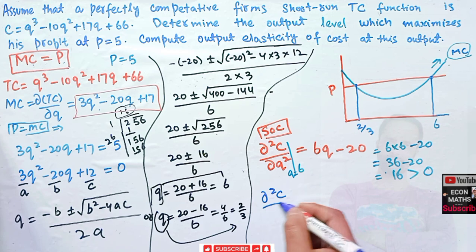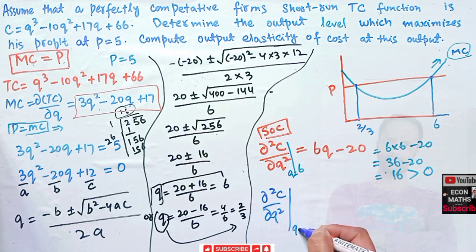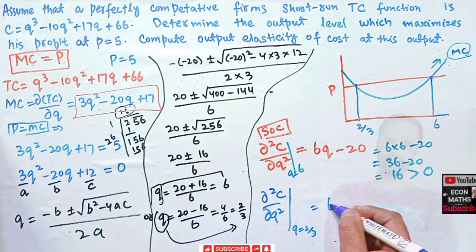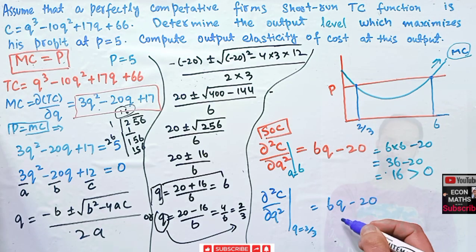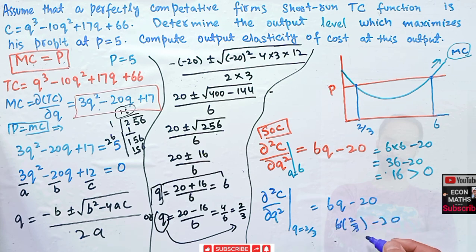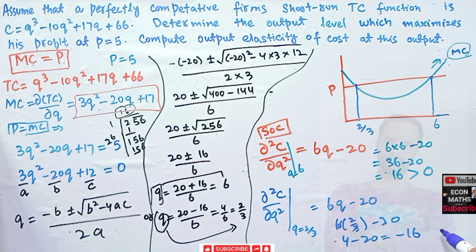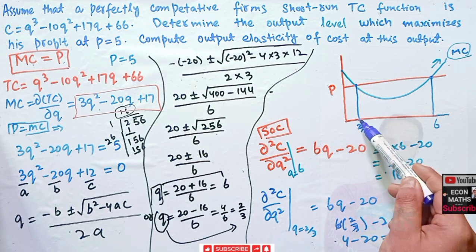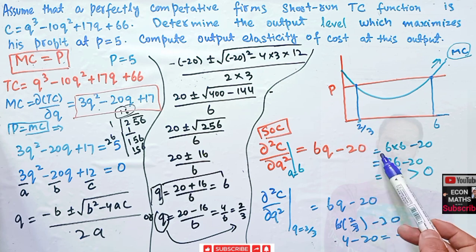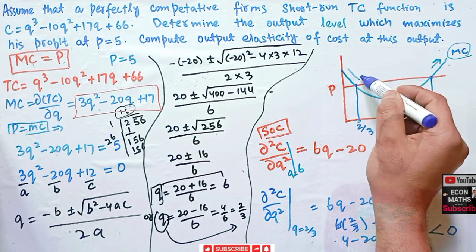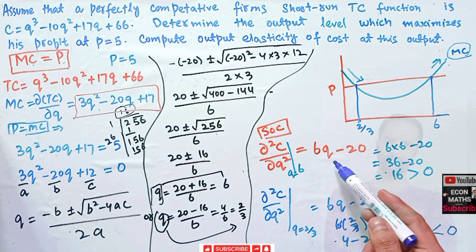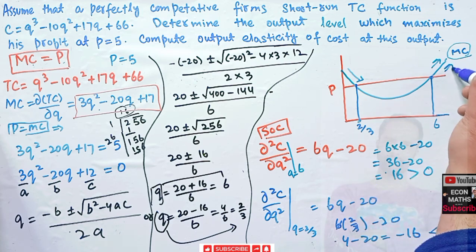Now let us evaluate d²C/dQ² at Q = 2/3. We get 6(2/3) - 20 = 4 - 20 = -16, which is less than zero. So at Q = 2/3, the slope of the marginal cost is decreasing, while at Q = 6, the slope of marginal cost is increasing.